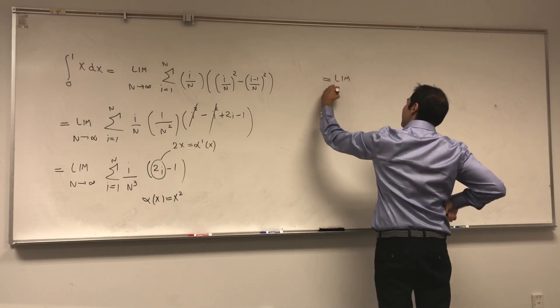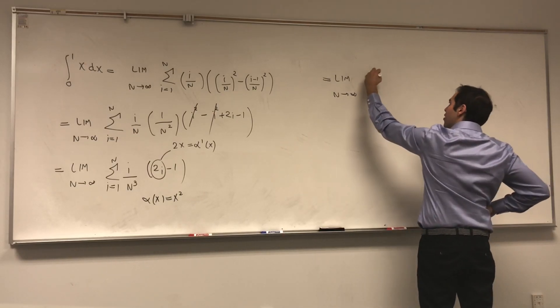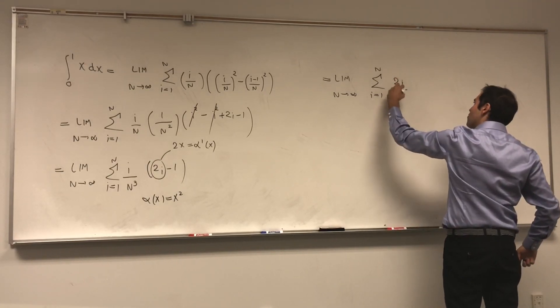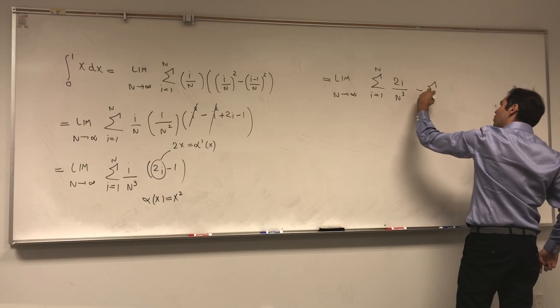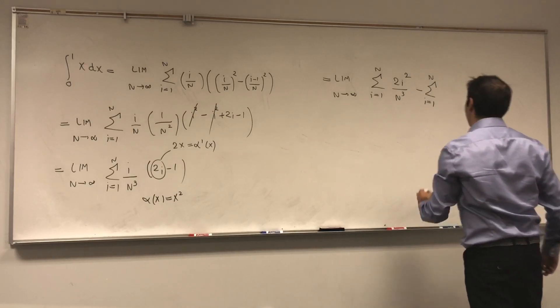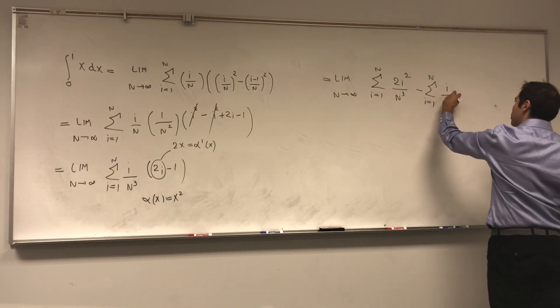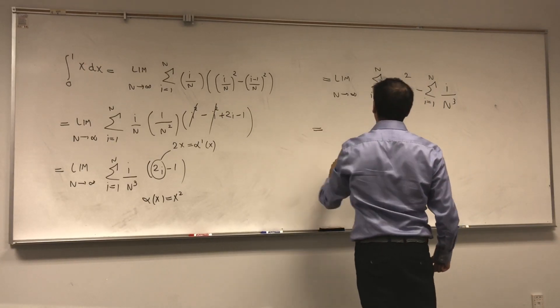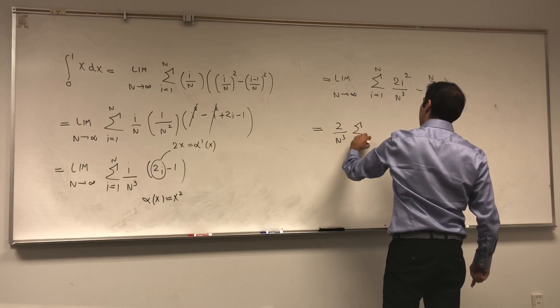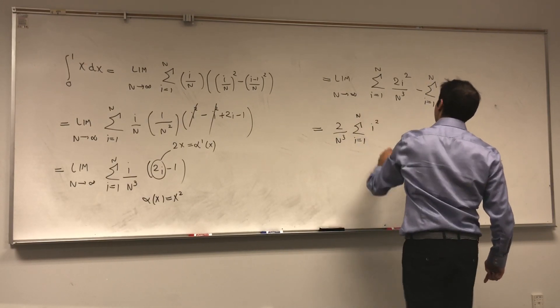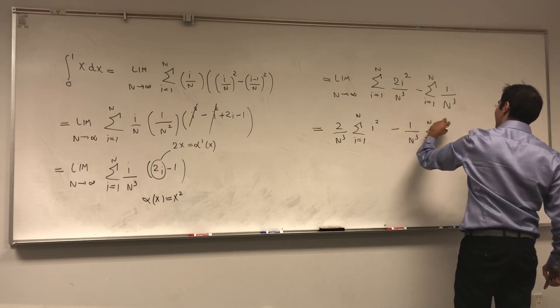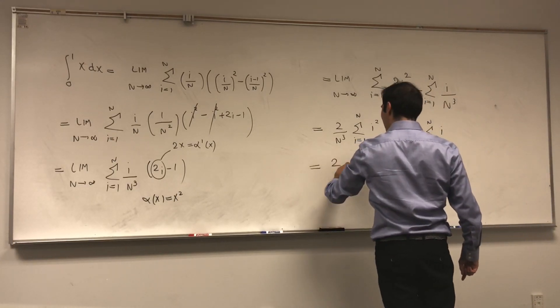So it's limit n goes to infinity of sum from 1 to n of 2i over n cubed minus sum from 1 to n of, sorry, 2i squared minus i. 2i over n cubed. And that becomes 2 over n cubed sum from 1 to n of i squared minus 1 over n cubed sum from 1 to n of i.